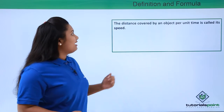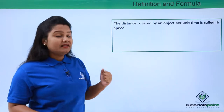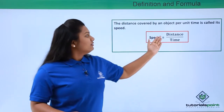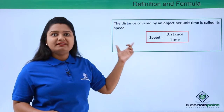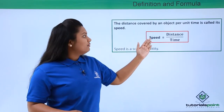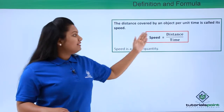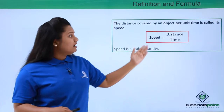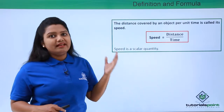We define speed as the distance covered by an object per unit time, and the formula for speed is distance divided by time taken by the object. Speed is also a scalar quantity, since it depends upon distance and time — both of which are scalar quantities not accompanied by direction — and thus speed, which depends on these two scalar quantities, is also a scalar quantity.